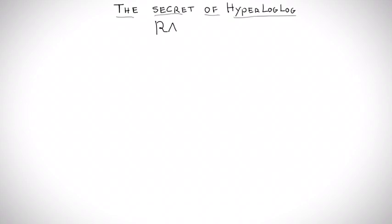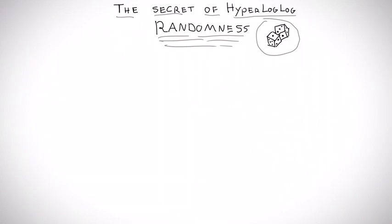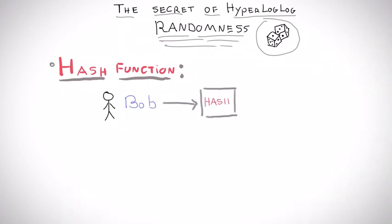The secret sauce of hyperloglog is in the use of randomness. The way we introduce randomness to the problem is by using a hash function. In our case, a hash function is an algorithm that transforms each name to a random sequence of zeros and ones of some fixed size.